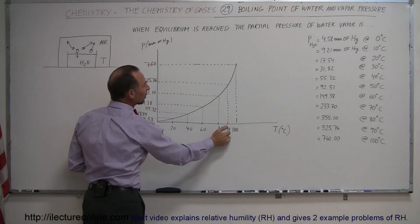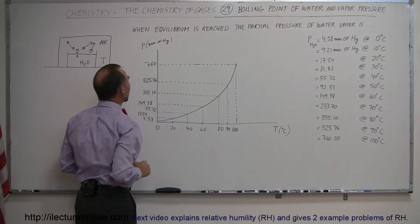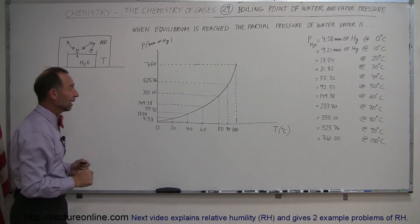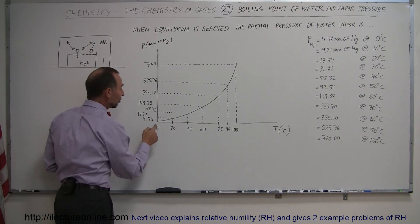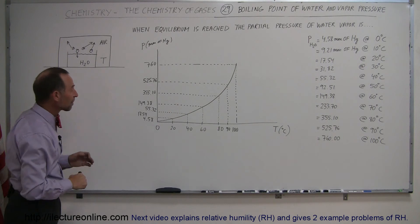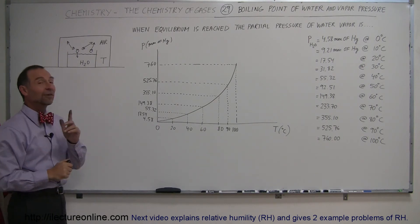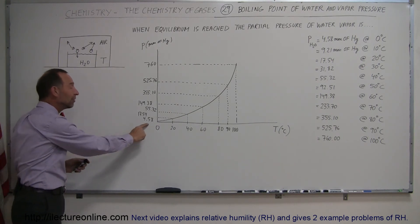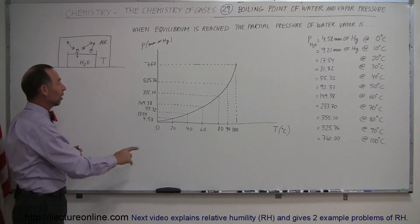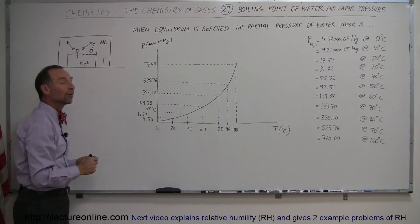Water will boil at 90 degrees centigrade when the atmospheric pressure is 525 millimeters of mercury. And notice, water will boil at 0 degrees centigrade when the pressure is 4.58 millimeters of mercury, which is kind of interesting because that happens to be roughly the pressure on the surface of Mars, which means on Mars, water will actually boil at 0 degrees centigrade.